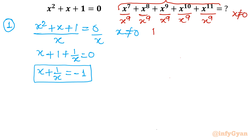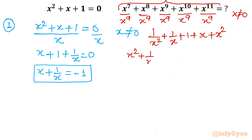What we will get is: 1 over x square plus 1 over x plus 1 plus 1 plus x plus x square. I will club the first and last terms, so I can write: x square plus 1 over x square, plus x plus 1 over x, plus 1. This is the value we have to find out.